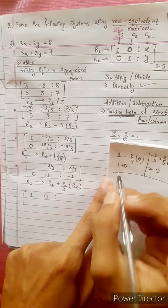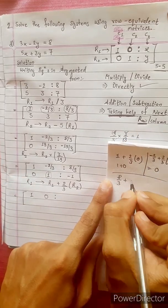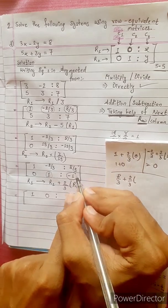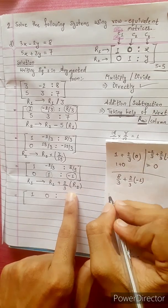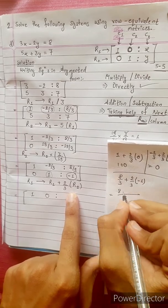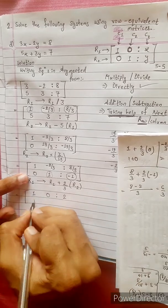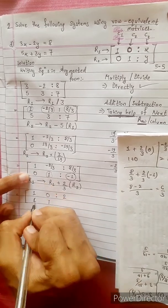Now the answer is very focused. 8 by 3 plus 2 by 3 times R2. R2 equal to 1, minus one equals 2, 3 LCM, 8 minus 2, 6.